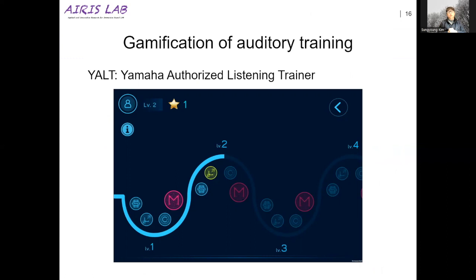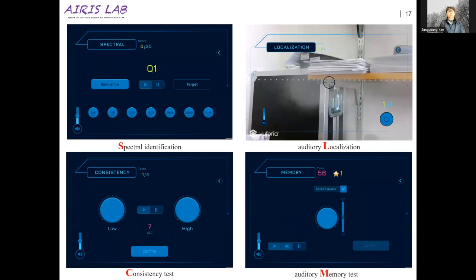It's basically a challenge-and-conquer concept: you complete one stage and move to the next. The game has four units or modules. It trains spectral identification and timbre, it does tonal localization training, it measures consistency, and it also measures mix memory capabilities — how quickly a listener can remember the balance of a given mix of sound components — as the fourth module.